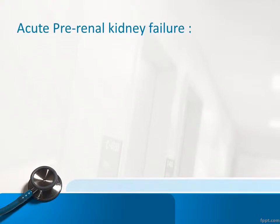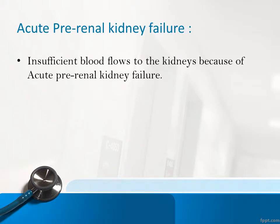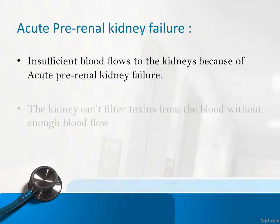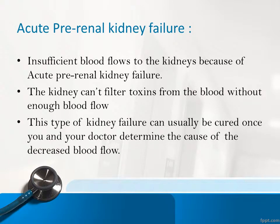Acute pre-renal kidney failure occurs when insufficient blood flows into the kidneys. The kidney cannot filter toxins from the blood without enough blood flow. This type of kidney failure can usually be cured once you and your doctor determine the cause of the decreased blood flow.